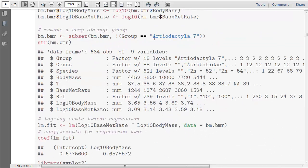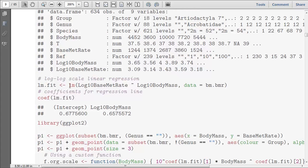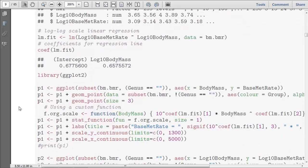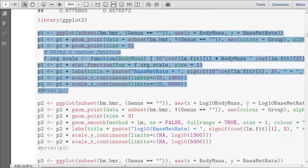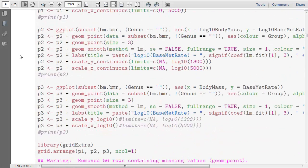So it turns out that there was one group that was really bizarre. So I took a subset of the data, and I excluded, with the exclamation point, everyone who was in this particular group. And I took a subset, looked at the structure of the data. I fit a linear model of the log basal metabolic rate to the log body mass. Here are the coefficients. These numbers are what appear in those equations that were in the plot. And then I've got three sets of plotting functions. And I'm going to focus on the bottom two.